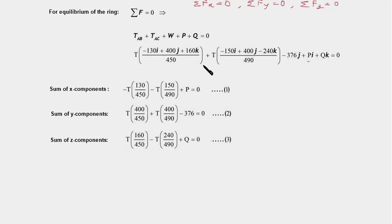And now we have the third equation, which is summing all the k components from this equation. So now we have three equations and three unknowns, namely T, P, and Q. And we notice that in the second equation there is only one unknown, T, so we'll first solve this equation.